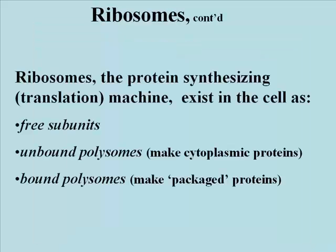Continuing with a little information about ribosomes, you should be able to find free ribosomal subunits and polyribosomes, or polysomes. Polysomes are ribosomes assembled on a messenger RNA molecule, and may be attached to membranes — which means they're bound — or not, meaning they're unbound.